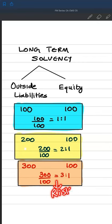In scenario three, the risk element is high. In scenario one, the risk element is very low, and that's what debt-equity ratio basically measures.